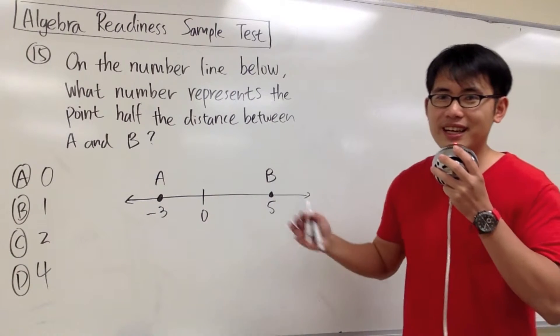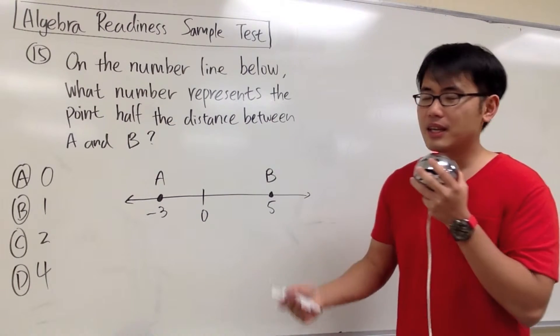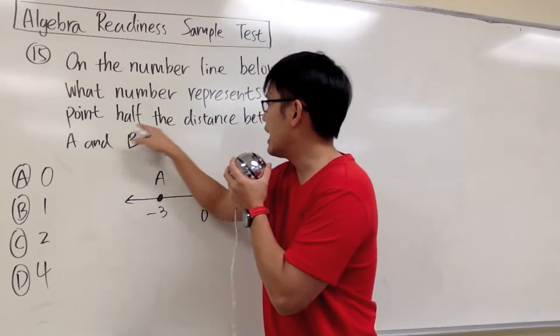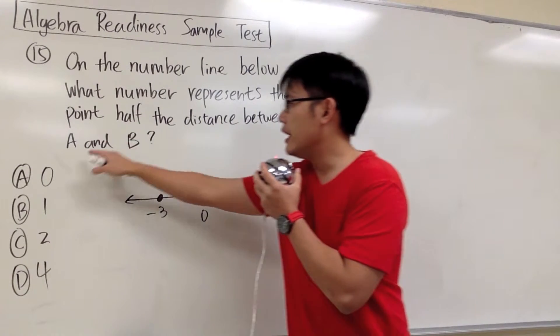But then this question sounds slightly confusing, isn't it? What does the point half the distance between A and B mean?